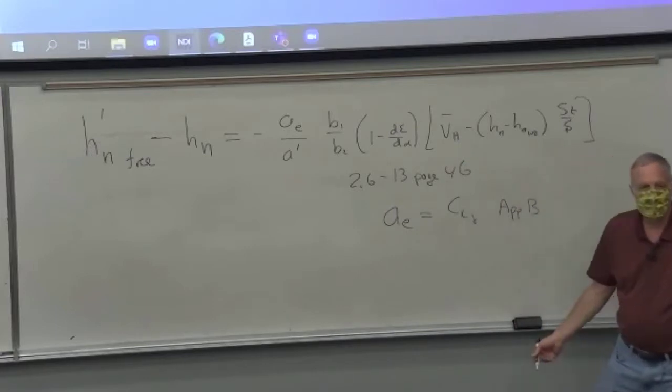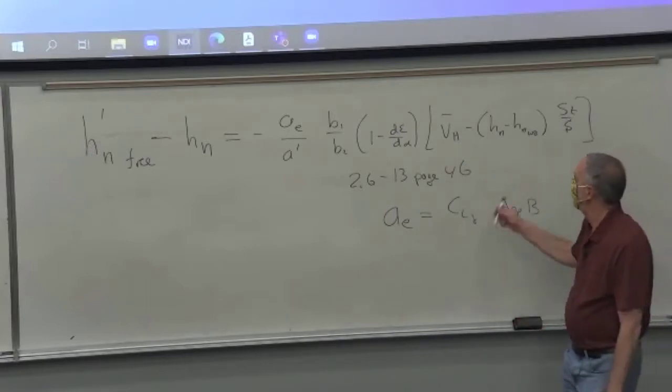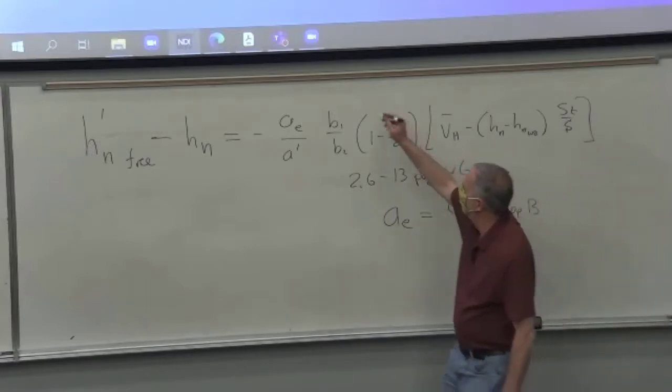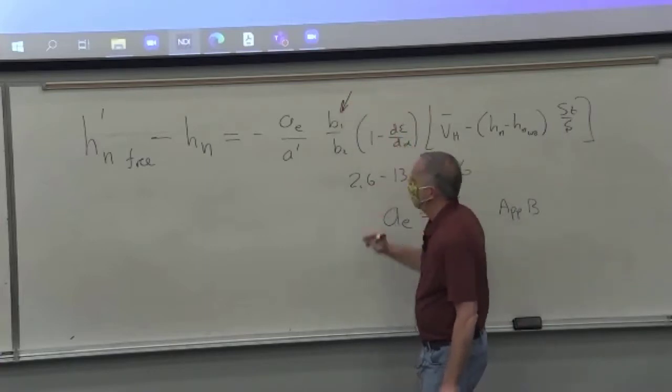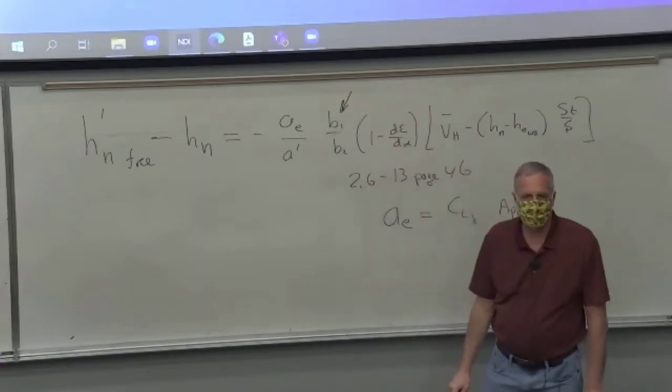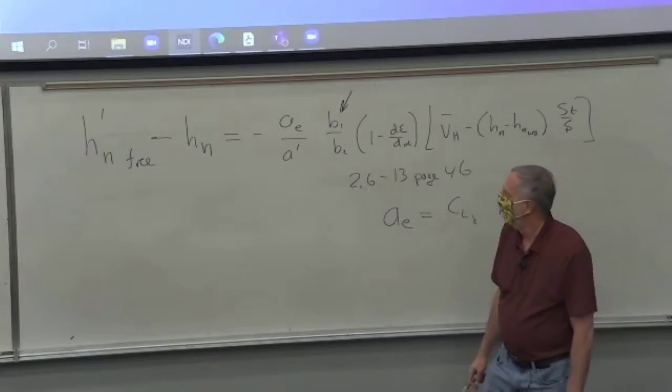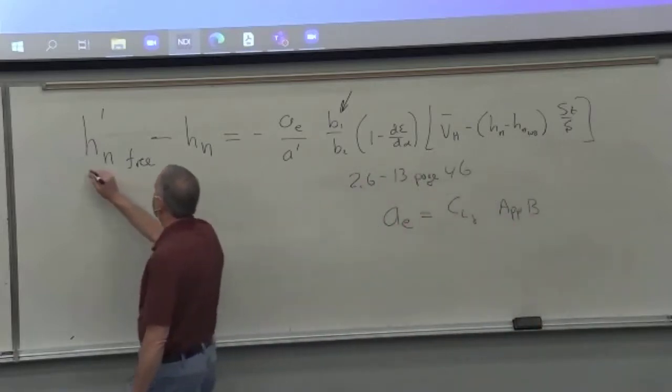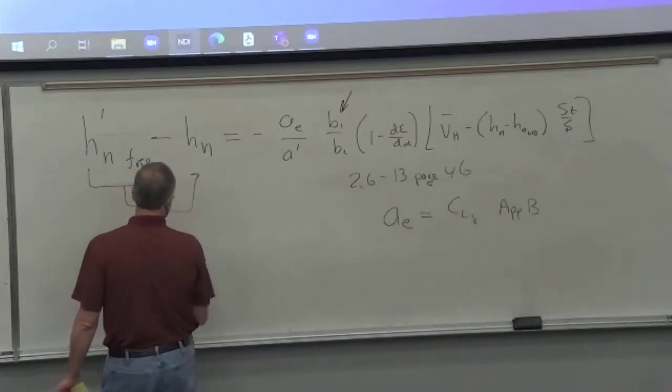And this is equation 2.613, page 46 in your book. And AE is equal to CL delta from Appendix B. So once we've done all the analysis, it's real easy to put all your airplane parameters. Notice that we've got the trim tab hinge moment stuff that goes in here. So you have to do that. But you can easily figure out where your neutral point is stick-free relative to the current neutral point.